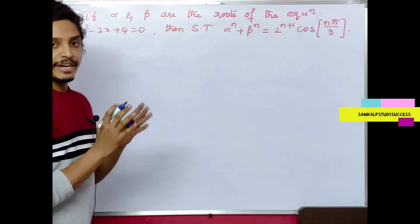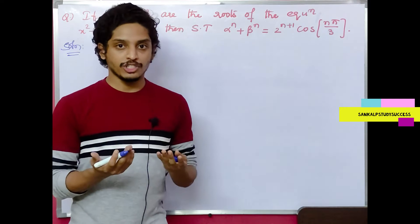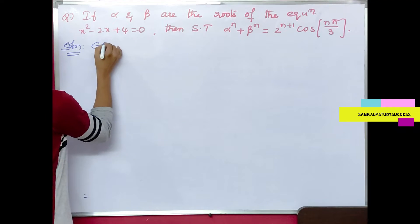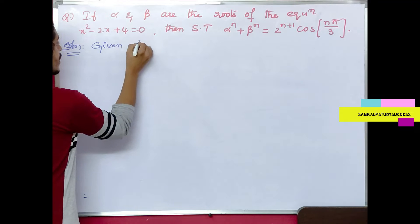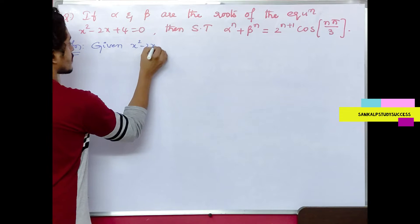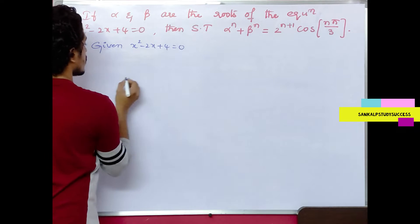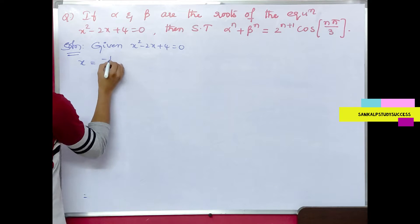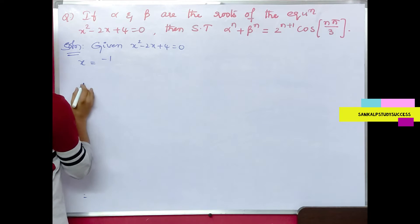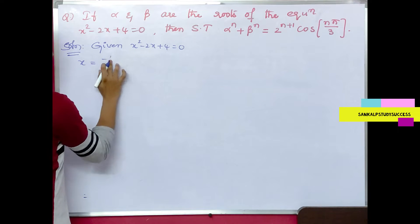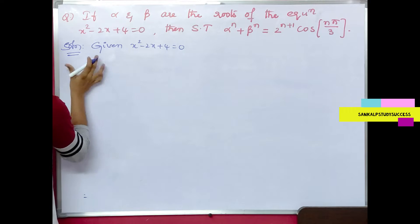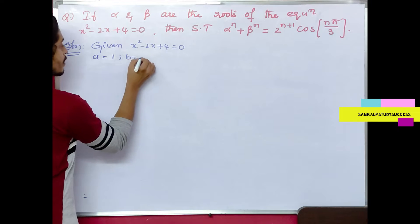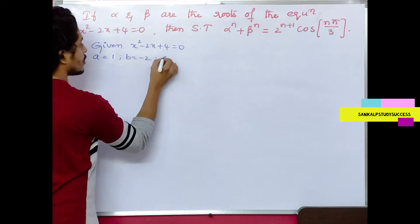First of all, we have to obtain alpha and beta. Given quadratic equation: x² - 2x + 4 = 0. To find the roots, we use x = (-b ± √(b² - 4ac)) / 2a. Here a = 1, b = -2, c = 4.